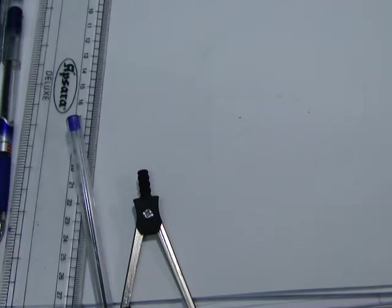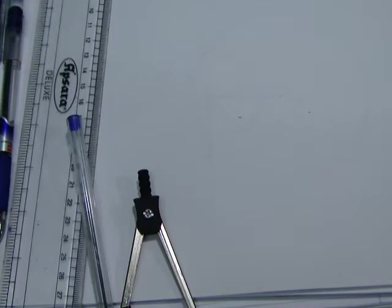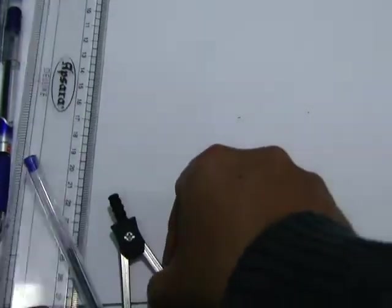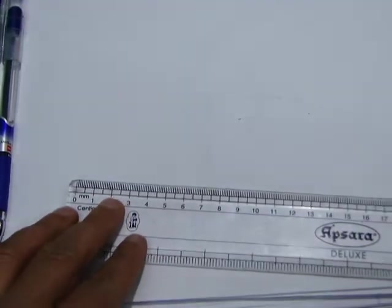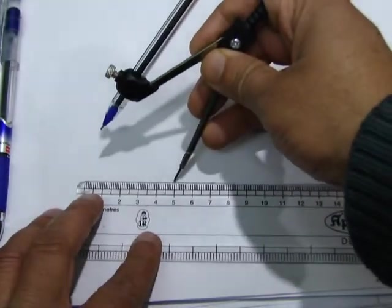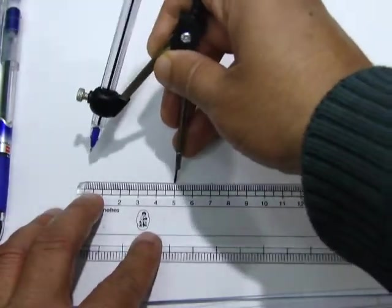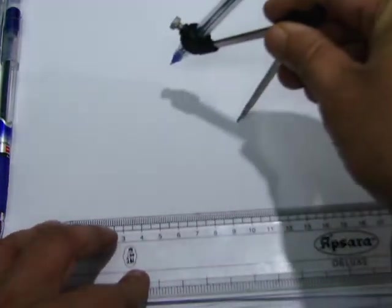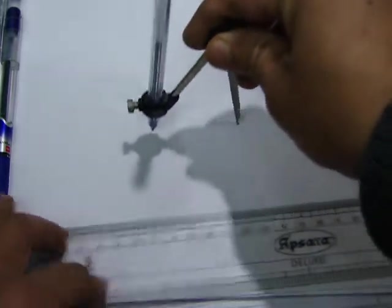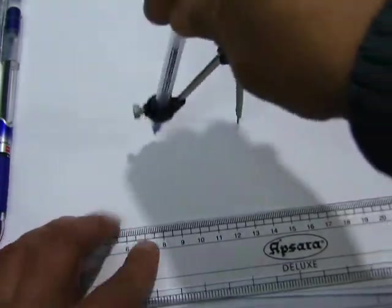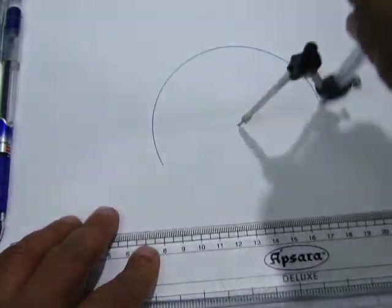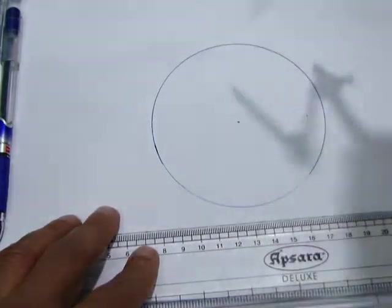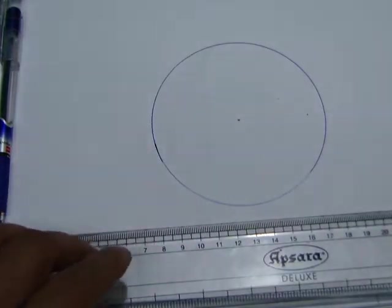To do this question, first we will draw a circle of radius 5 cm. Let us take the radius of the circle as 5 cm and draw a circle. Now this is a circle of radius 5 cm.